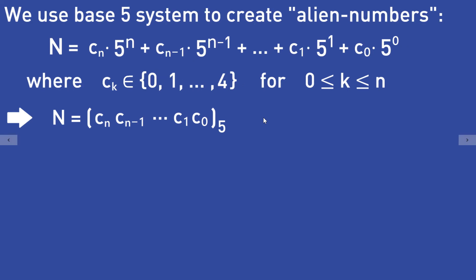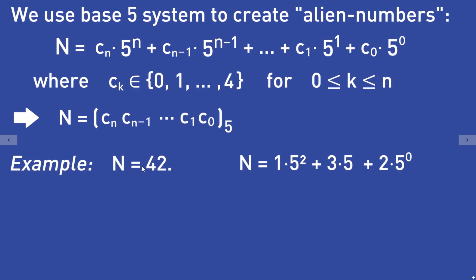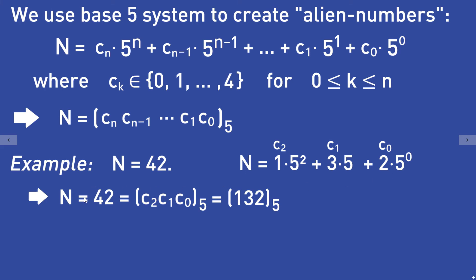Let's try this with the number N equals 42. We have: 42 equals 1 times 5 squared, plus 3 times 5, plus 2 times 5 to the power of 0. Here c_2 equals 1, c_1 equals 3, and c_0 equals 2. That means the base 5 representation of 42 is the digit sequence 1, 3, 2.